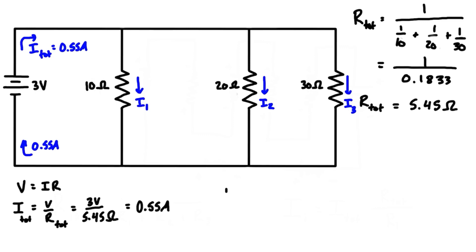Now the next thing we can do is write the current divider formula, which is: the individual current of the resistor we're looking at equals the total current times the ratio of the total resistance over the individual resistance of each resistor.